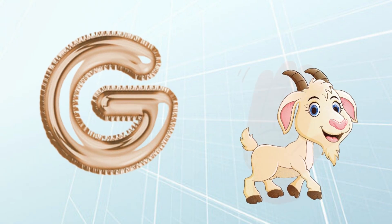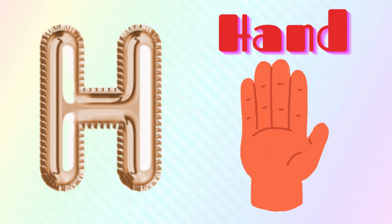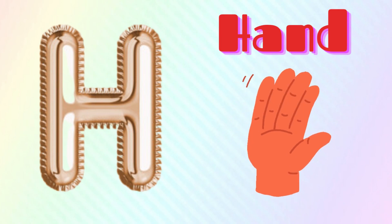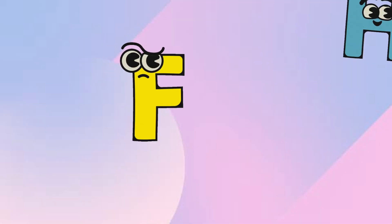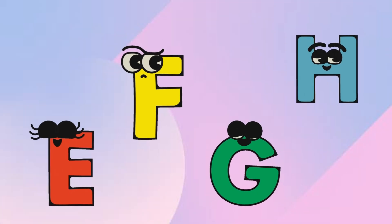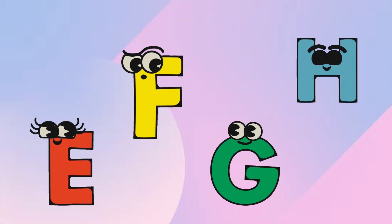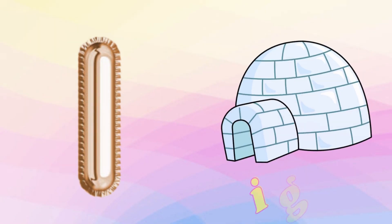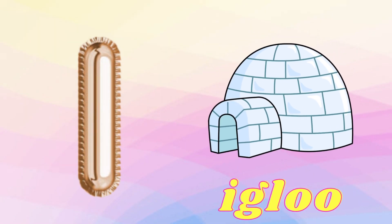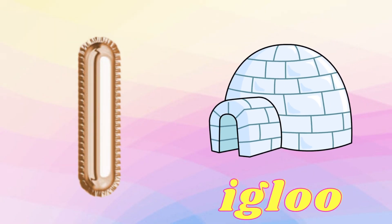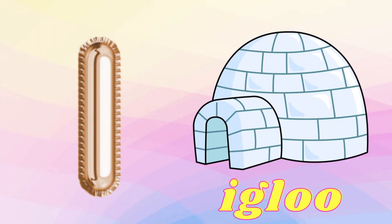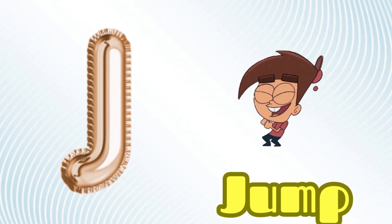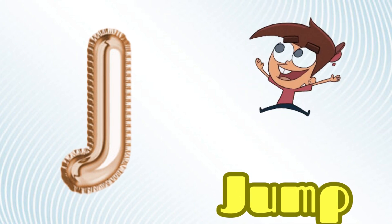H is for hand, h-h-hand. I is for igloo, i-i-igloo. J is for jump, j-j-jump.